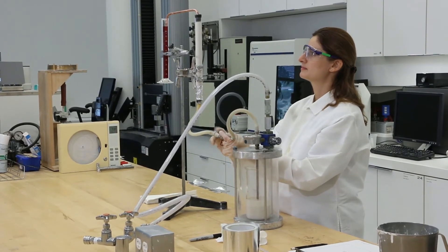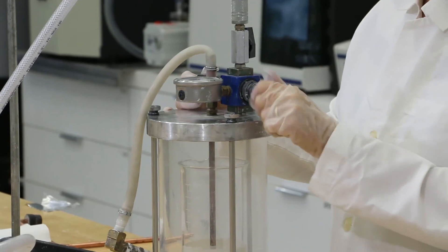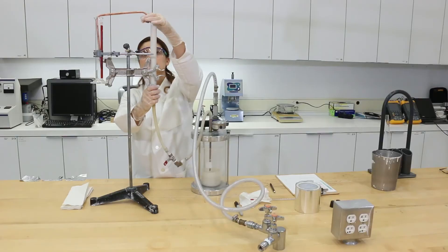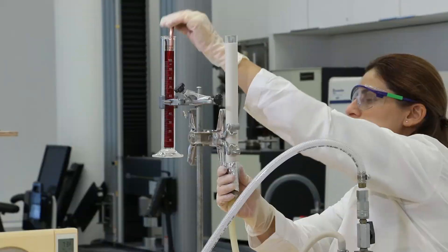Close the valve on the flexible tube and release the pressure in the vessel. Next, remove the column from the stand.